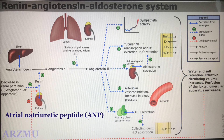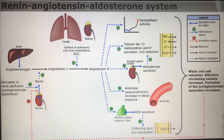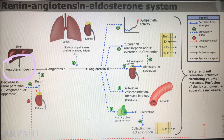The release of renin is inhibited by atrial natriuretic peptide, which is released by stretched atria in response to increases in blood pressure. Angiotensinogen is an alpha-2 globulin synthesized in the liver, also known as a renin substrate, which is cleaved at the N-terminus by renin.